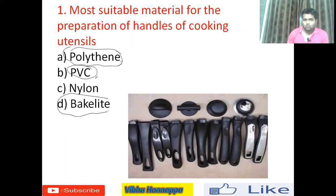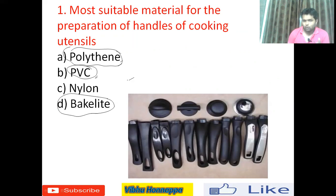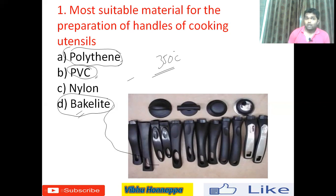Bakelite is the material used as a handle for cooking utensils — cooker handles, tawa handles, gas stove switches — all these handles are basically made up of Bakelite. You can see the images; this is very familiar in daily life. It can tolerate up to 350 degrees Celsius of temperature, and it is an insulator — it will not allow heat or electricity to pass through it. That's why we use Bakelite in cooking utensils as a handle. The right answer is option D, Bakelite.